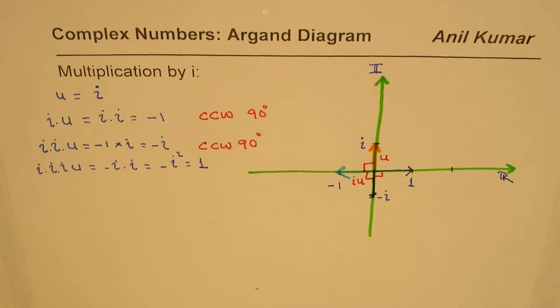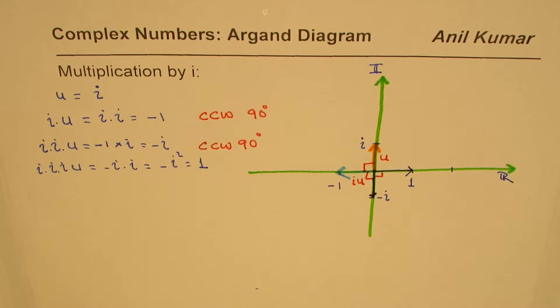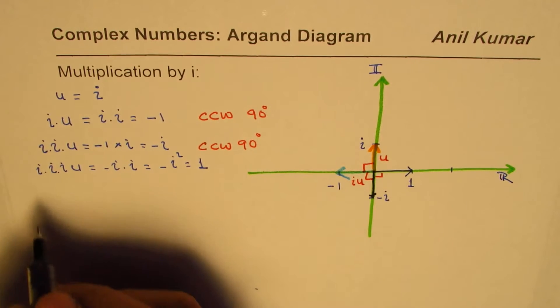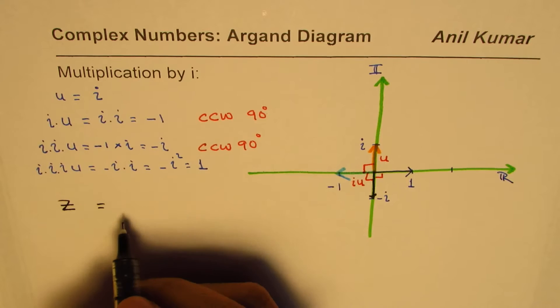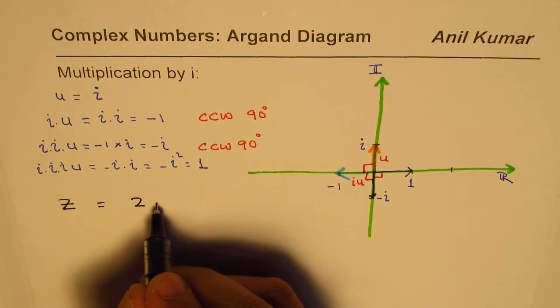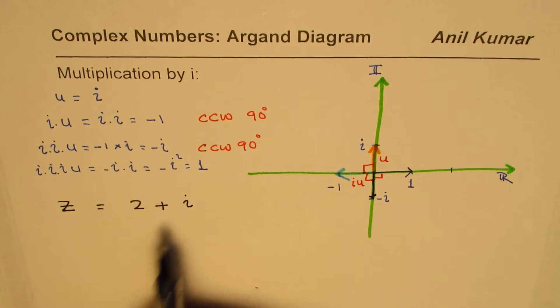Now this does not only happen with the pure imaginary part i. It is true for any complex number. Let us take an example. Let us say we have a complex number z equals 2 plus i. For simplicity, I am taking 2 plus i.